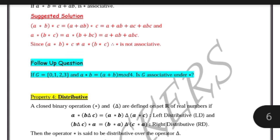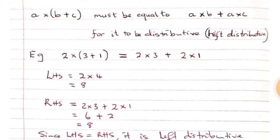In simple terms, if we have two binary operations — in this case multiplication and addition — for multiplication to be called distributive over the plus sign, A times (B plus C) must equal A times B plus A times C. We can simplify the terms inside the brackets by first adding B plus C, then multiplying the answer by A.